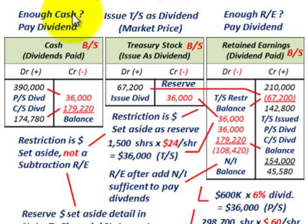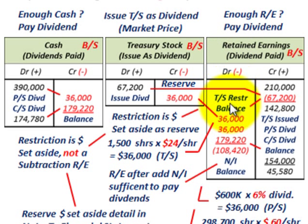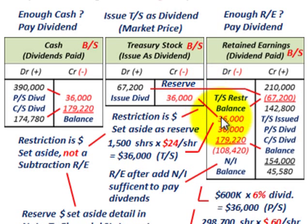To review: do we have enough cash? Yes — we started with $390,000, paid the preferred stock dividend of $36,000 and the common stock dividend of $179,220, leaving $174,780 remaining in cash. But the question was whether we had enough retained earnings, because dividends reduce both cash and retained earnings. We had both a treasury stock dividend and cash dividends, both of which reduce retained earnings.